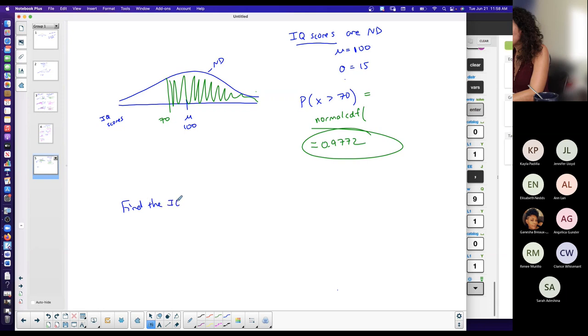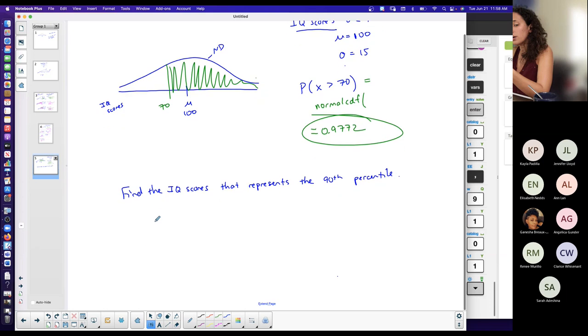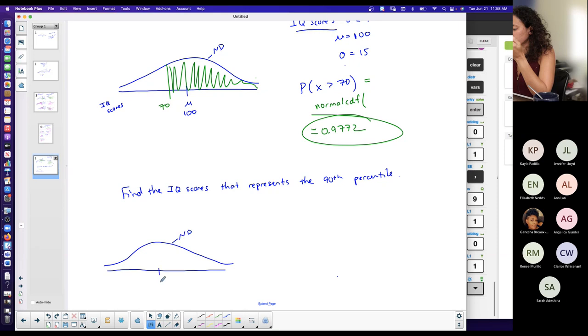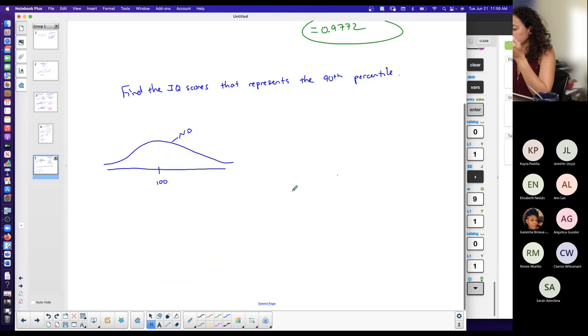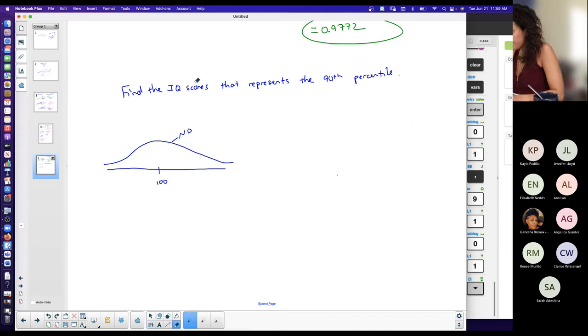Find the IQ score that represents the 90th percentile. I'm making this up. You are not given the curve. I draw it just for visual. The center of the curve is the mean, which in this particular case is 100. And now I have to figure out if I want the area or I know the area. Find the IQ score. So I basically want a value, which means I know the area.